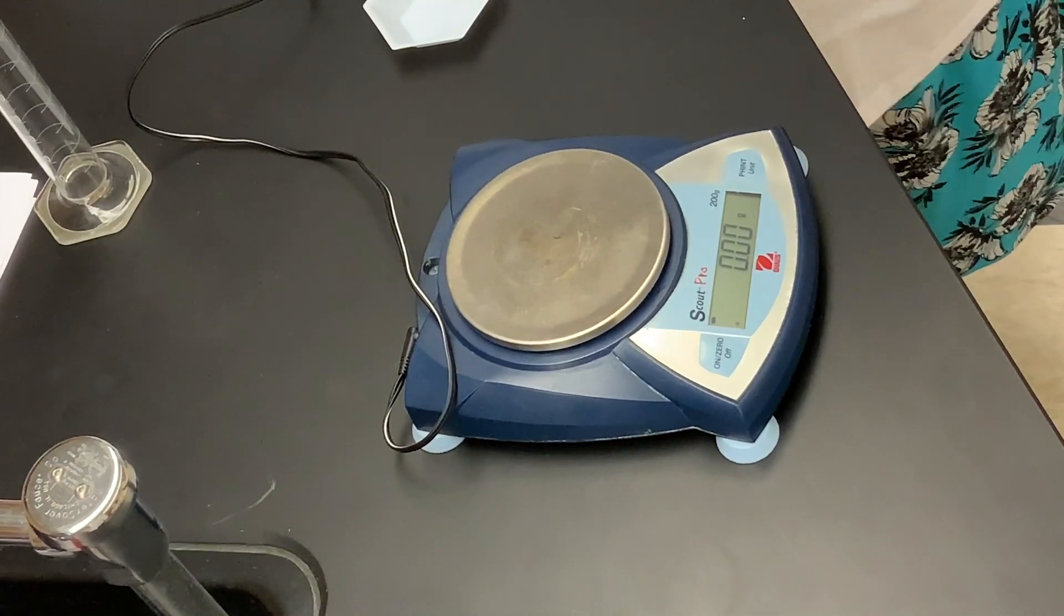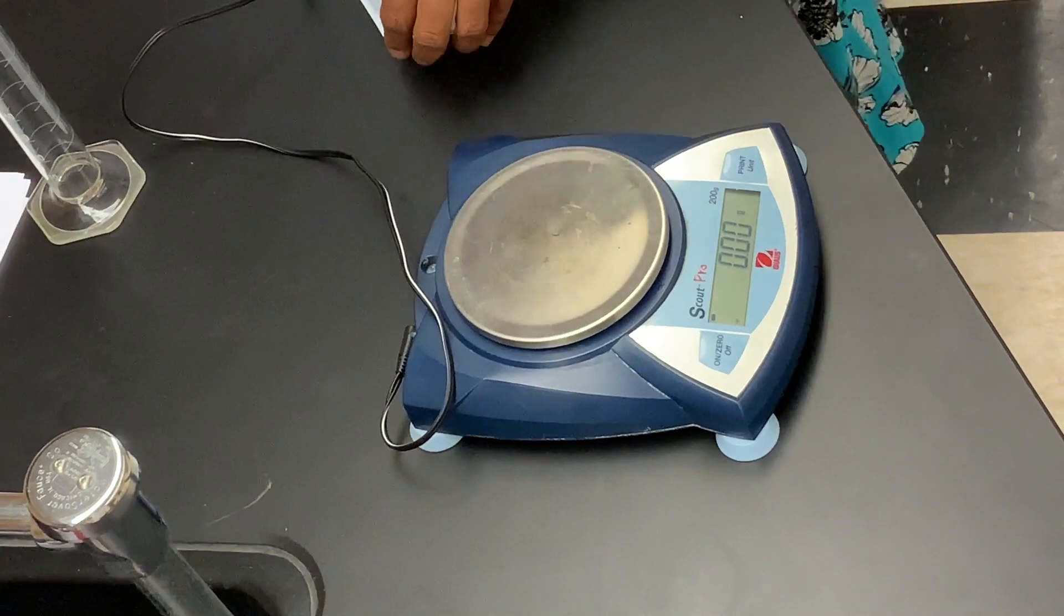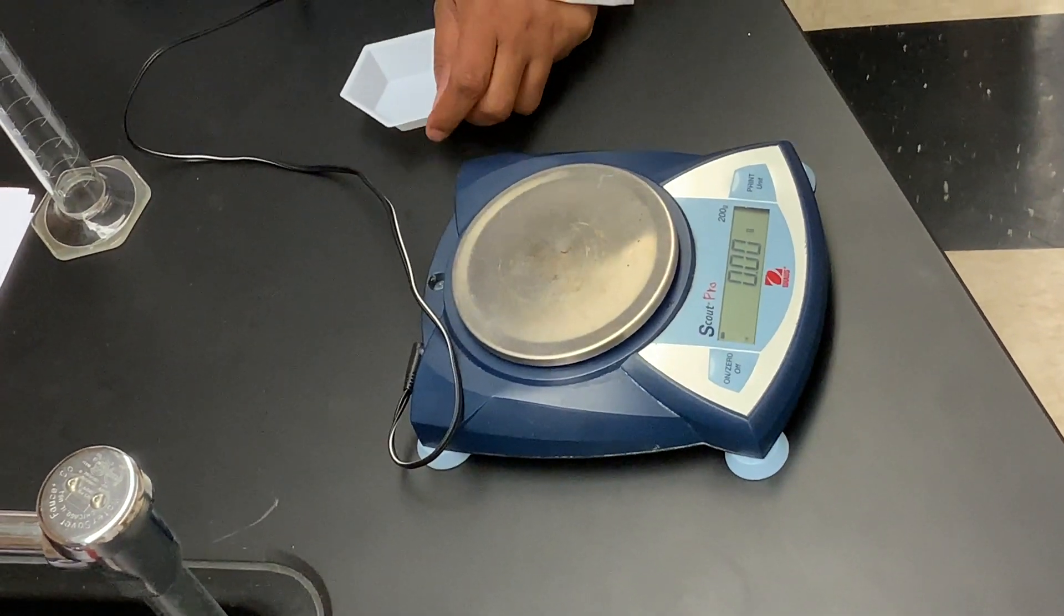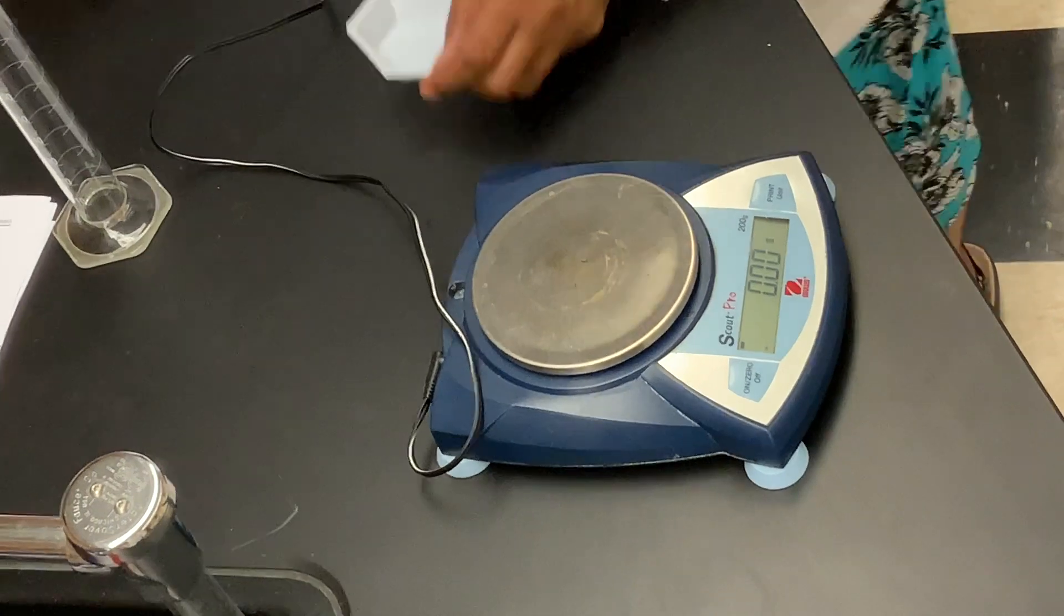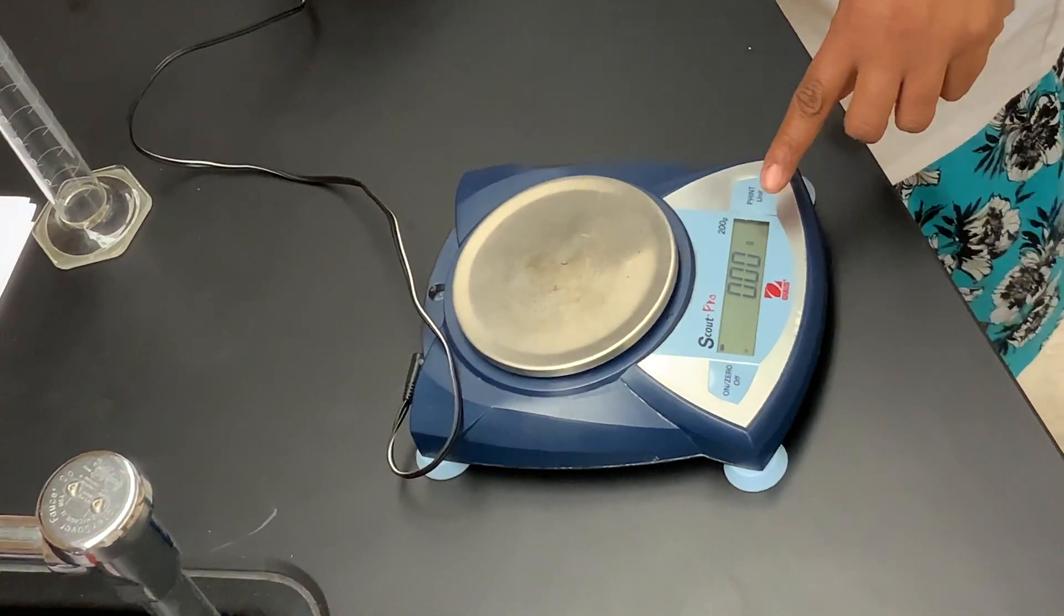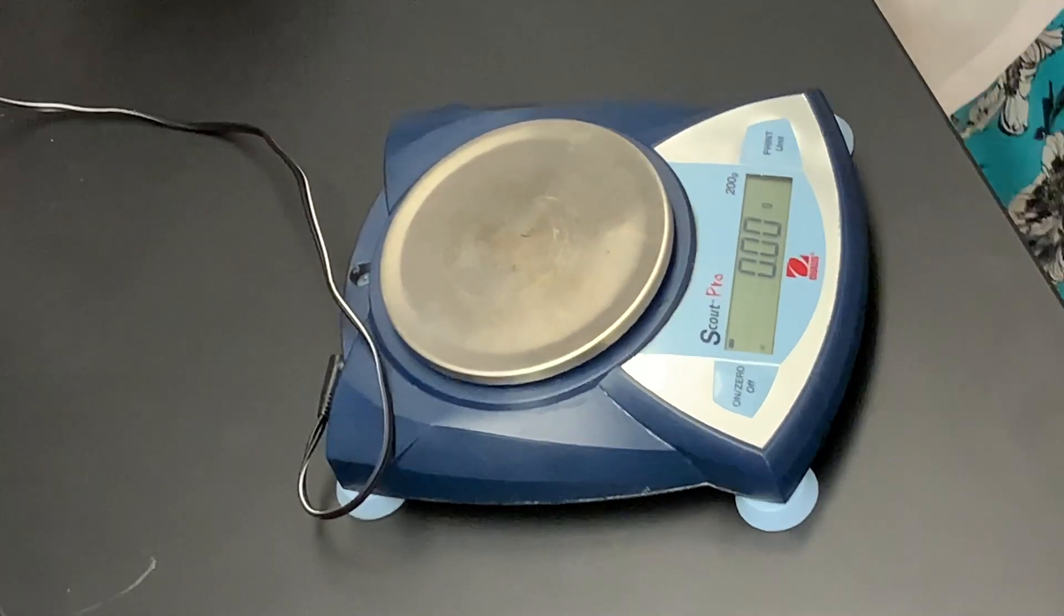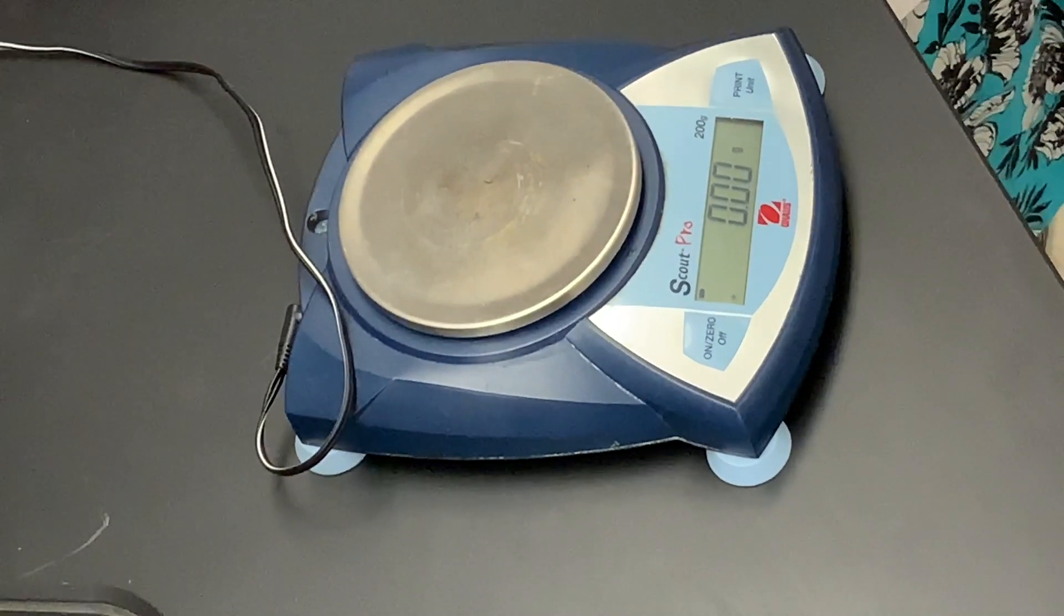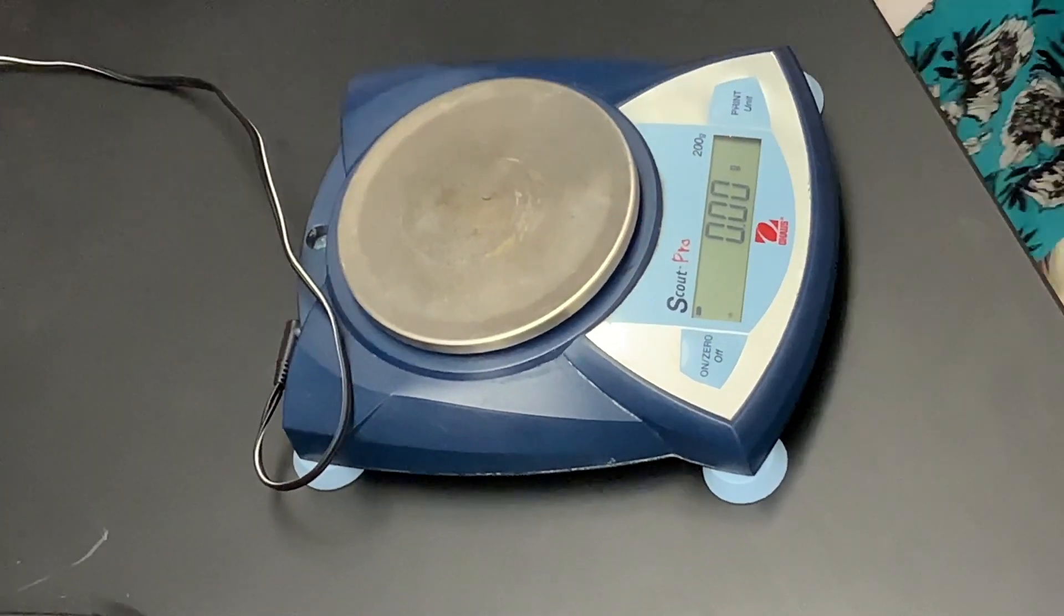When we're ready to measure our penny, we also notice that there's a unit on the balance, G, which stands for grams. So the masses that we're going to be determining are going to be in units of grams.